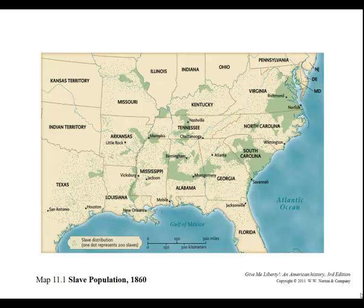The cotton kingdom would not have developed without the internal slave trade. The older slave states in the east came to depend on the sale of their slaves. Kentucky and Virginia became very big slave-selling states. Looking at the slave population map of 1860, the dark areas show South Carolina and Virginia as the heaviest. Along the Mississippi River you can see where slavery was concentrated. One dot on the map represents 200 slaves.